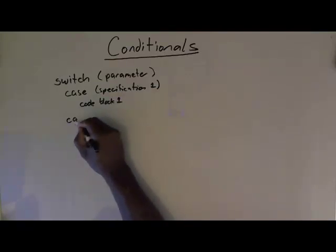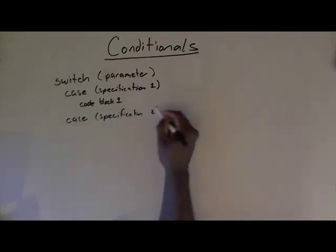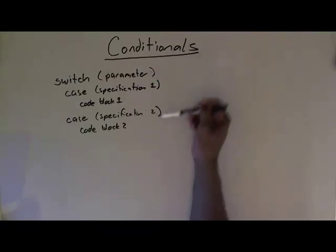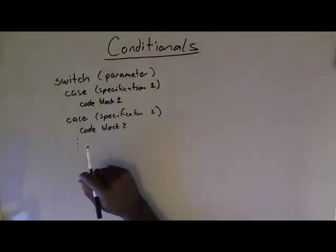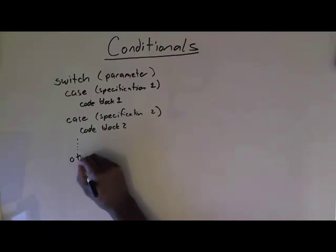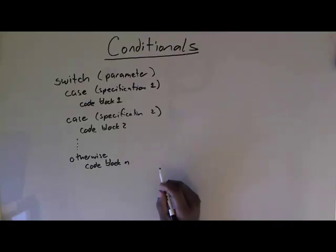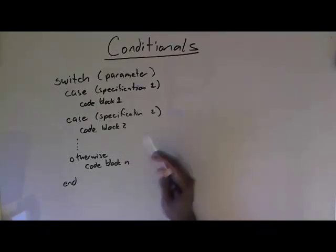Then if you want another specification — specification two — you have code block two. If the parameter meets this specification, then this code block runs. And so on. Then you have a default: if the parameter doesn't equal any of these specifications, you say 'otherwise' and do this code block. Then you end it. That's the general template for a switch statement.